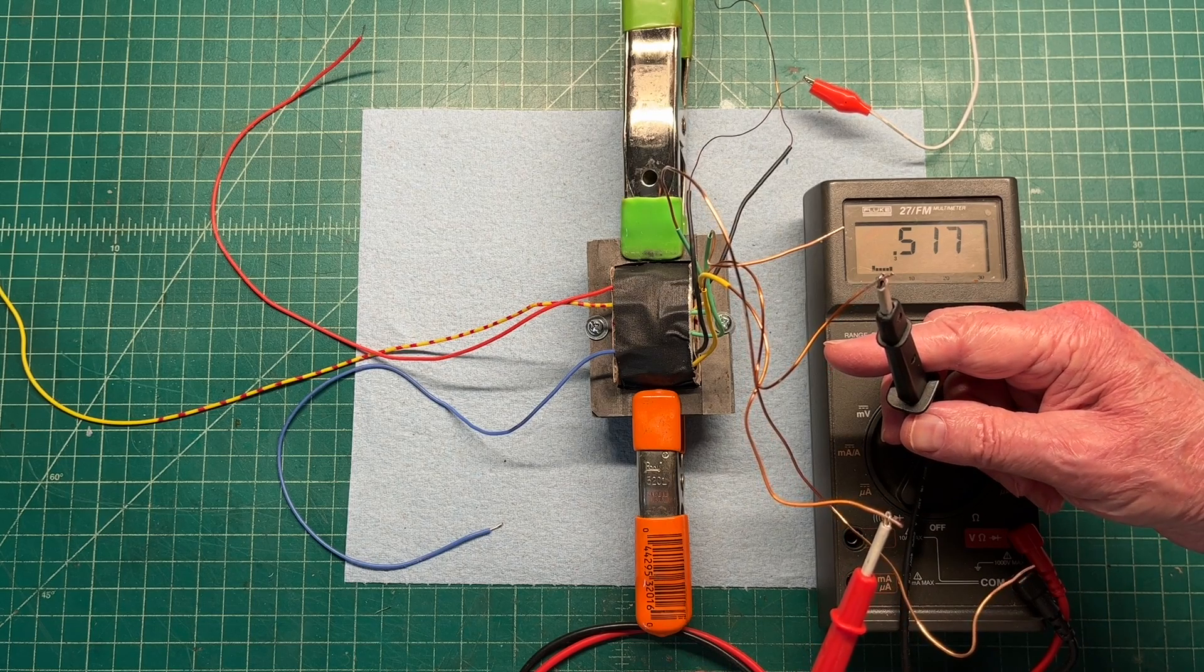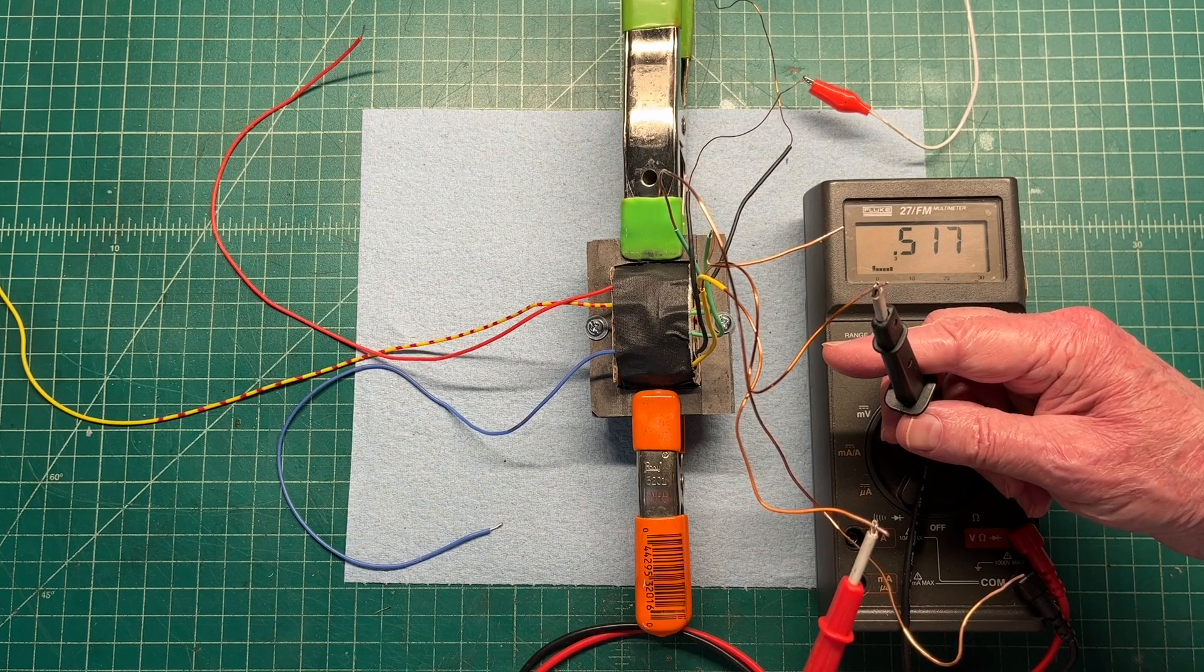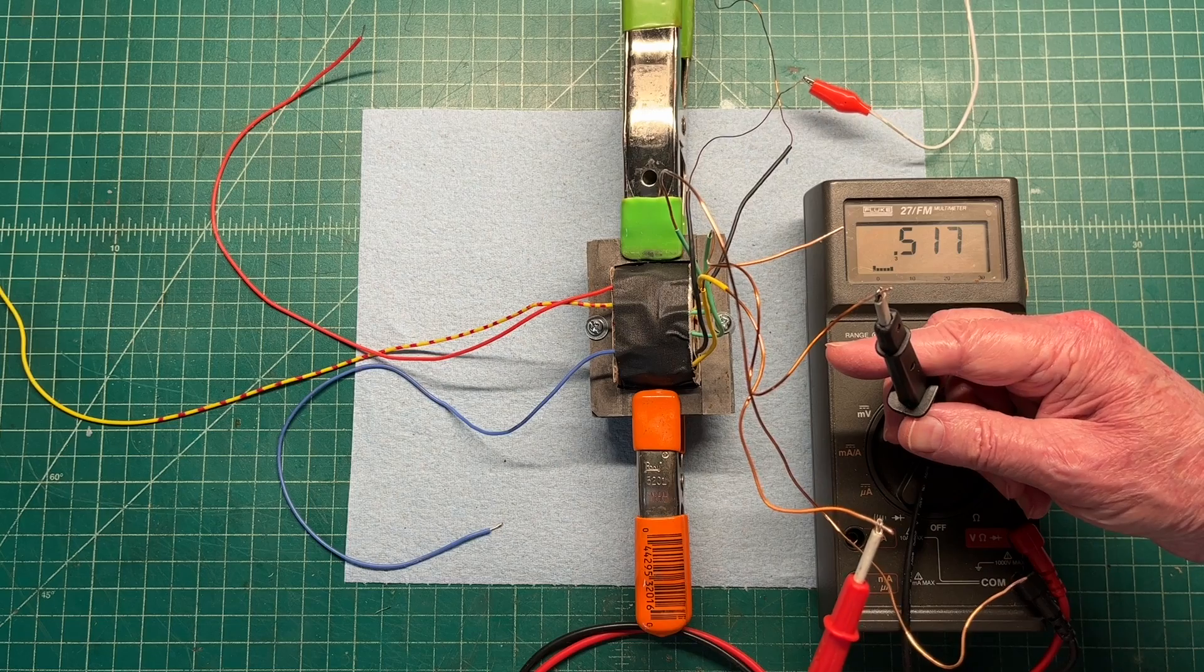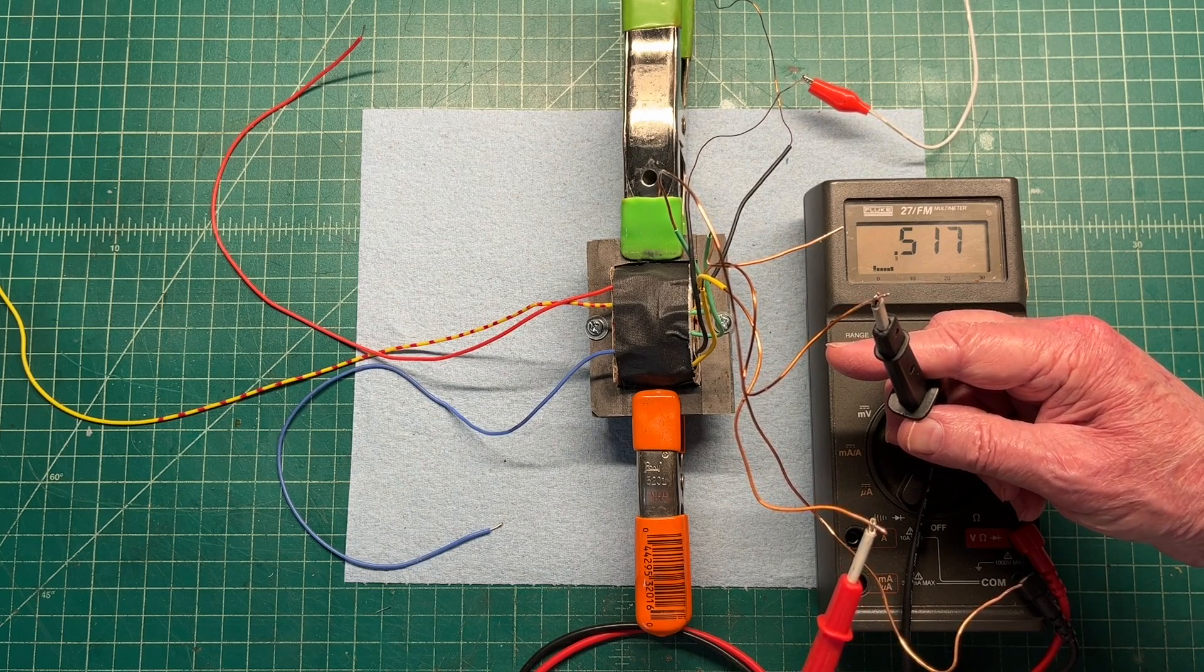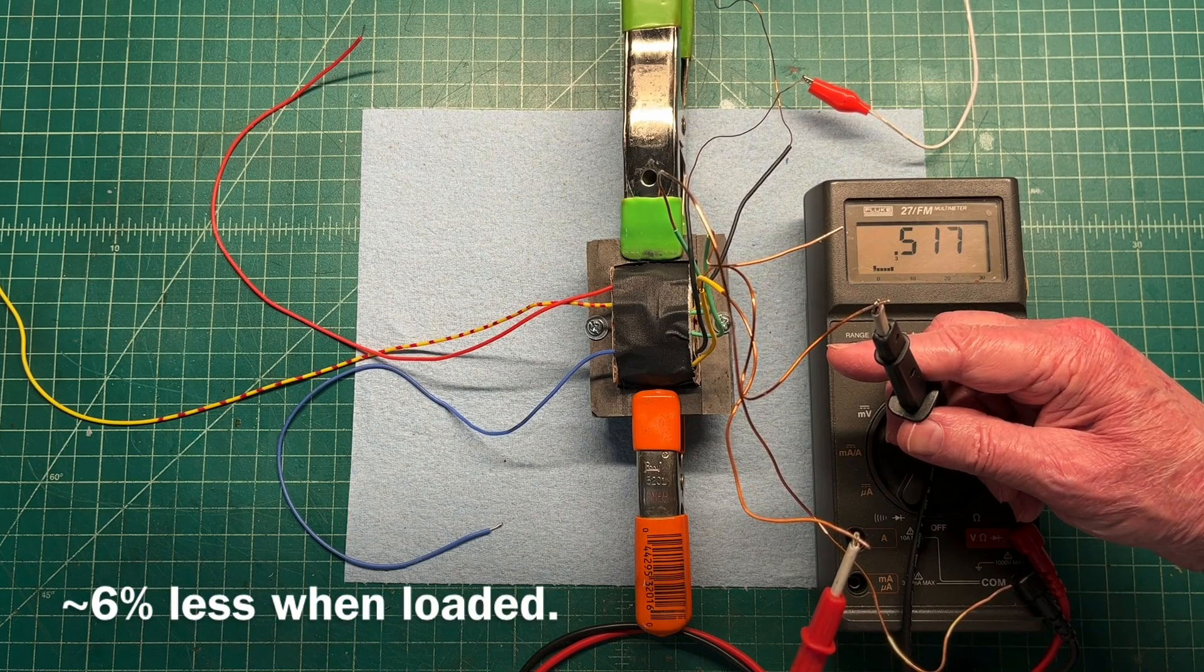Let's go to the calculator now and plug these numbers in. And see with the 120 volt input, we can calculate what the output voltage would be for the transformer. Again, unloaded, which will be less once loaded.